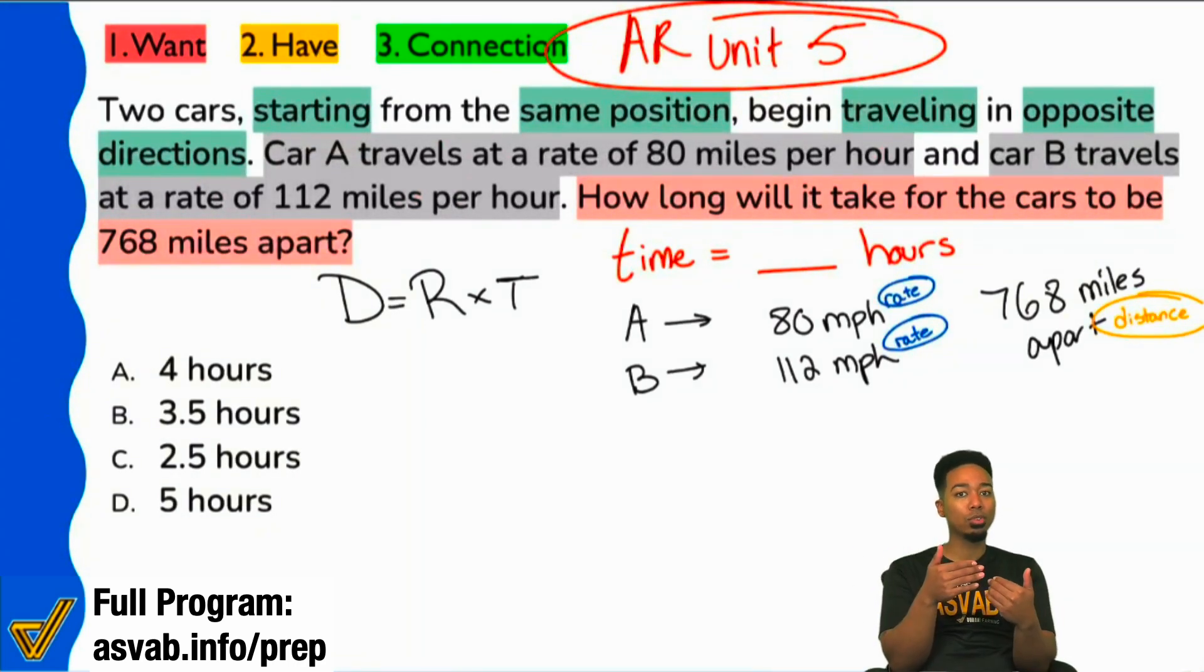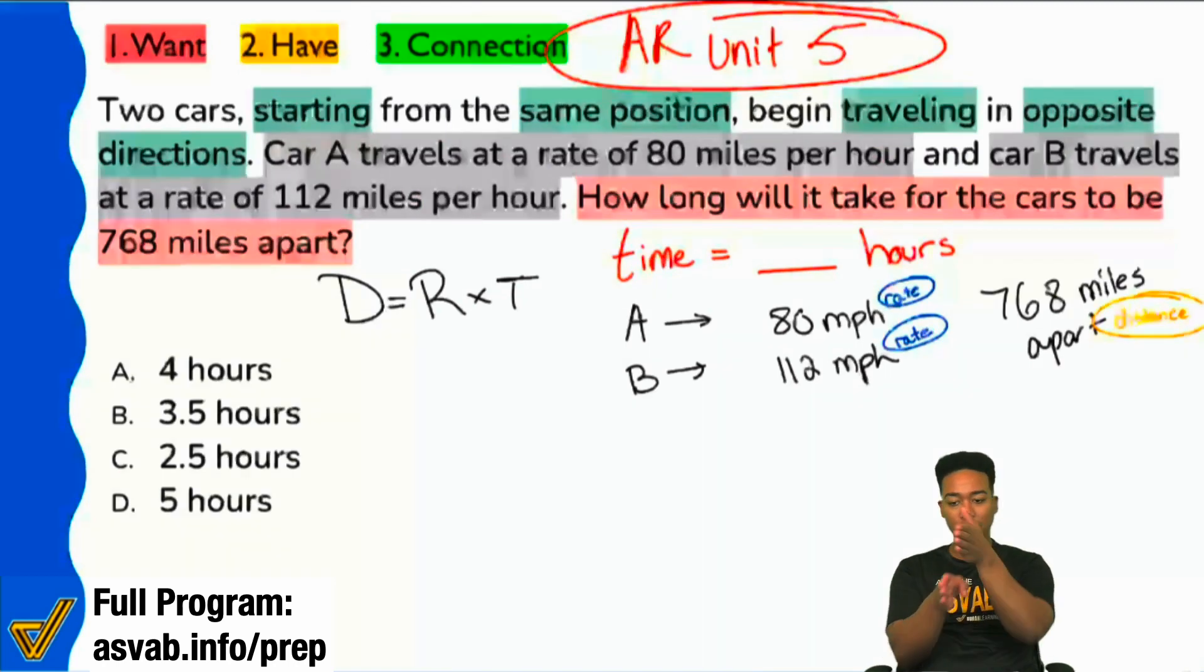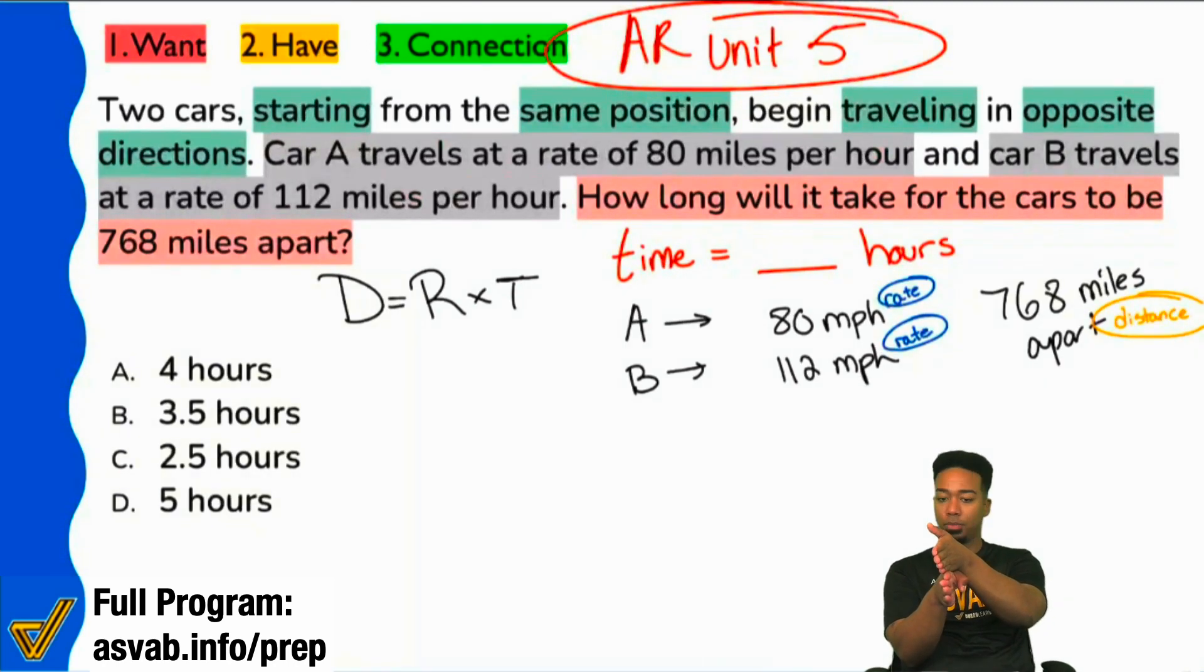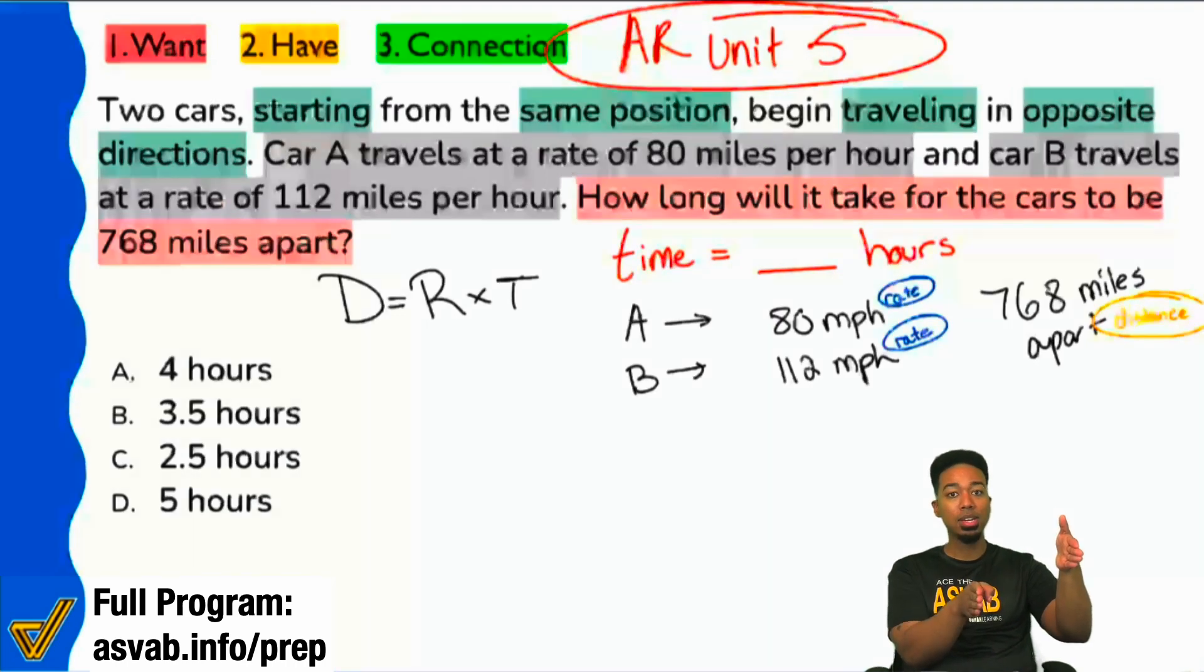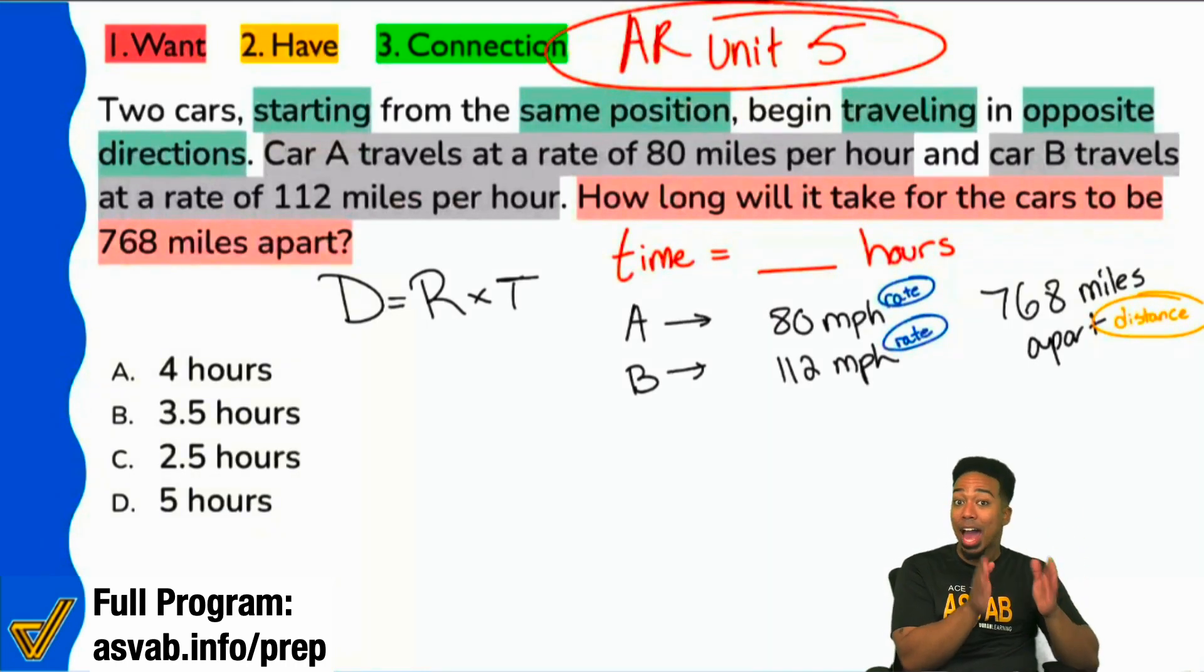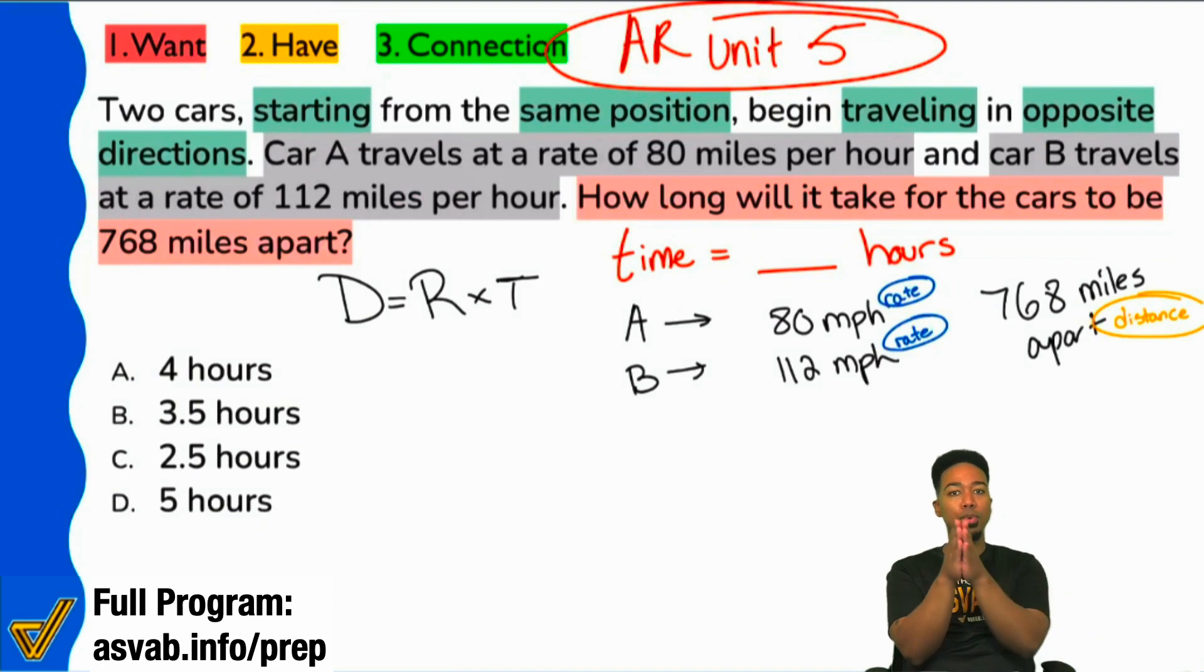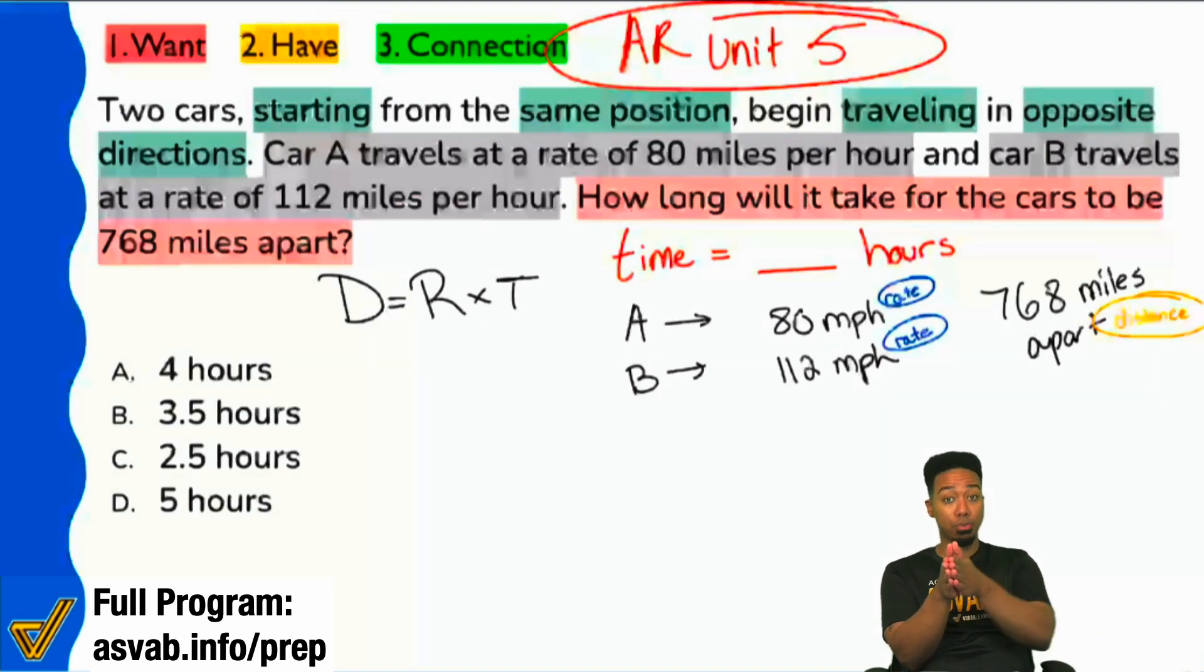Because we are trying to ignore the overlap. We're trying to ignore what they've both traveled. We only want the gap between them. So if we have this car taking three miles this way, this car going one mile this way, we subtract to get the gap of two miles.